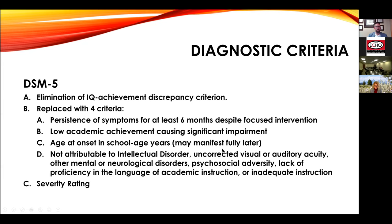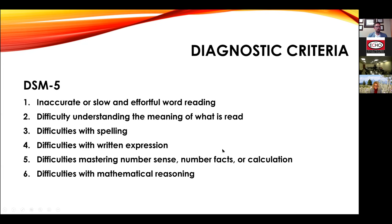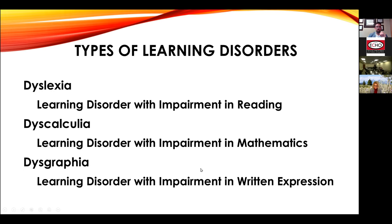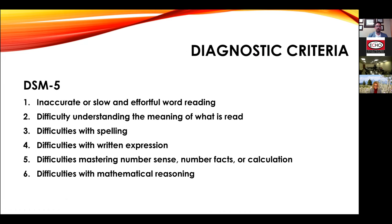The disorder also cannot be due to inadequate instruction — children must have access to a free and appropriate public education. The DSM-5 describes learning disorders as involving inaccurate or slow and effortful word reading, difficulty understanding the meaning of what is read, difficulties with spelling, difficulties with written expression, difficulties mastering number sense or calculation, and difficulties with mathematical reasoning. These are lumped together but each is a separate entity.